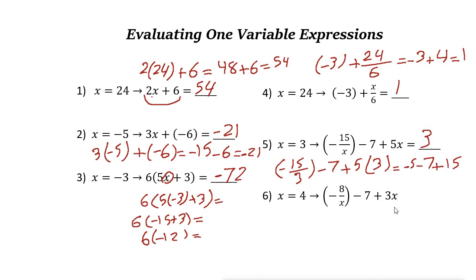Next one. Here x is 4. So negative 8 over 4 minus 7 plus 3 times 4. Negative 8 over 4 is negative 2. Minus 7 plus 3 times 4 is 12. So negative 2 minus 7 is negative 9. Plus 12 is 3. So here the answer is 3.